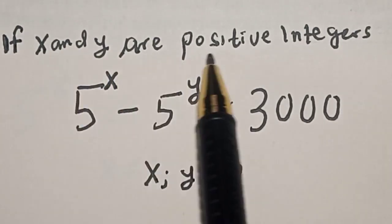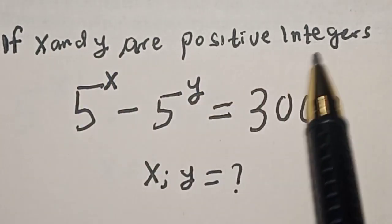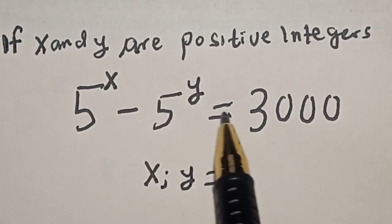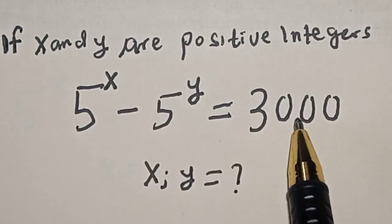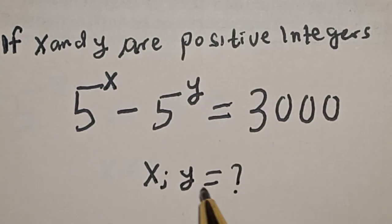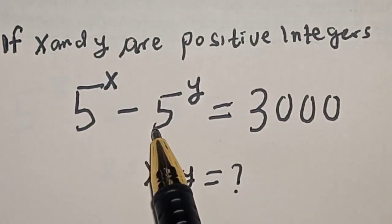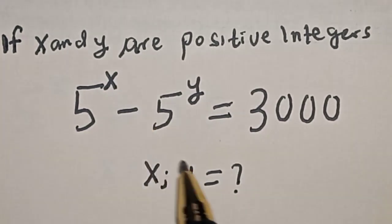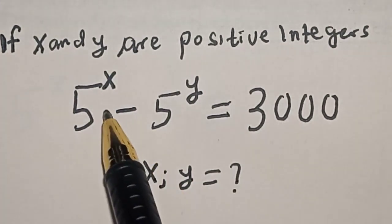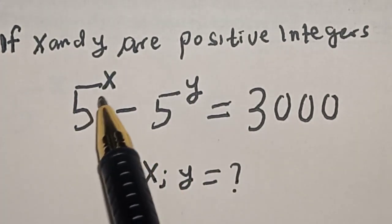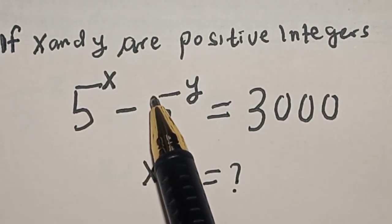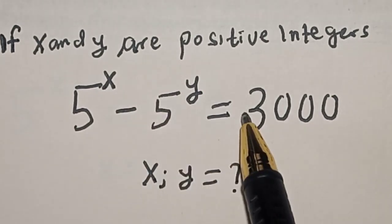If x and y are positive integers, and 5 raised to power x minus 5 raised to power y is equal to 3,000, what is the value of x and y? Hi everyone, welcome to my class. In this class, we want to find the value of x and y from this given equation: 5 raised to power x minus 5 raised to power y is equal to 3,000.